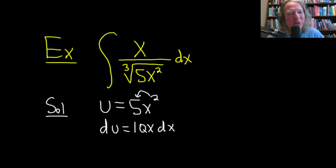So this is not quite what we have in our integrand. If you look at our integrand, we actually have x dx. But down here we have 10x dx. So we have an extra 10 here. So we have to get rid of it. To do that, we can divide both sides by 10.